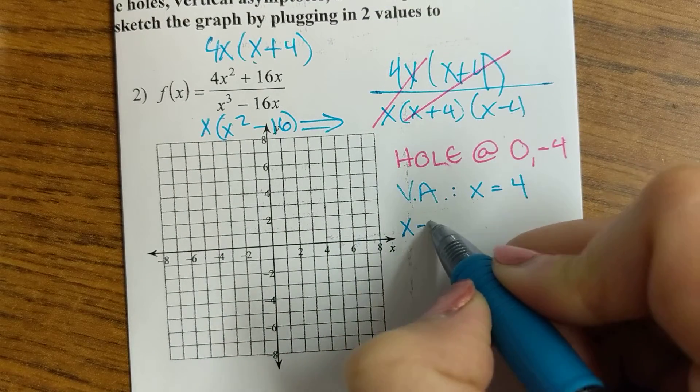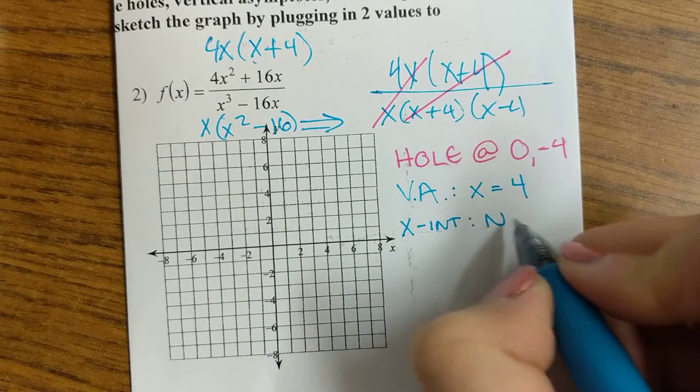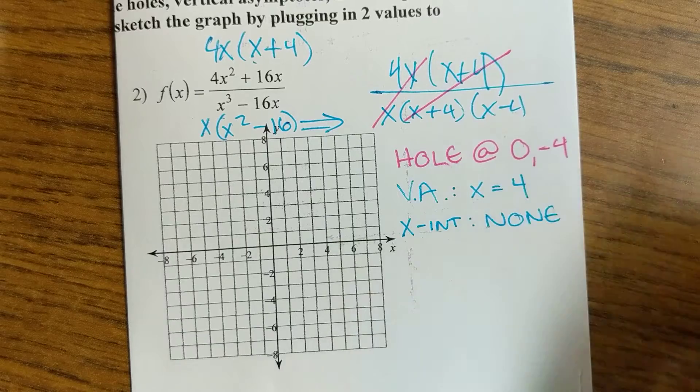My x-intercepts are anything that makes the numerator equal to 0 other than the holes, so there are no x-intercepts.